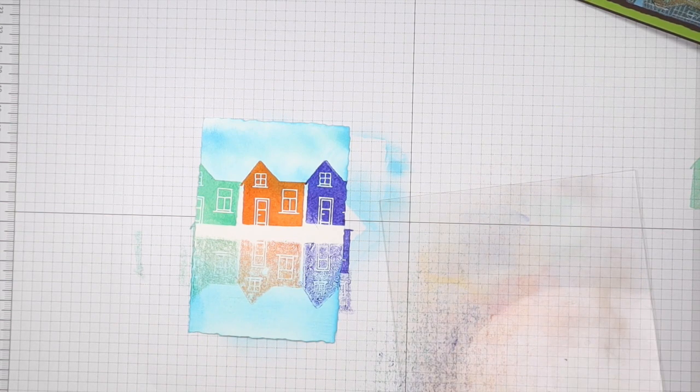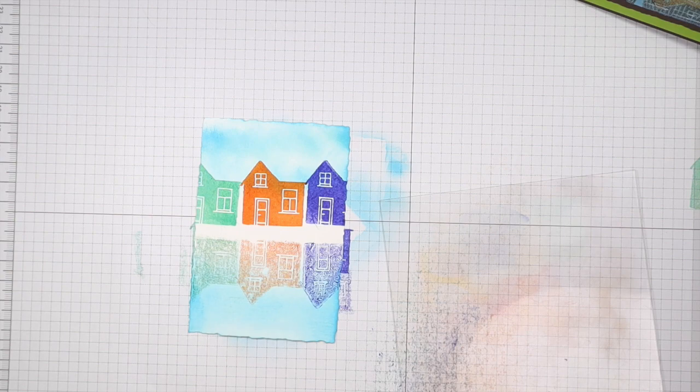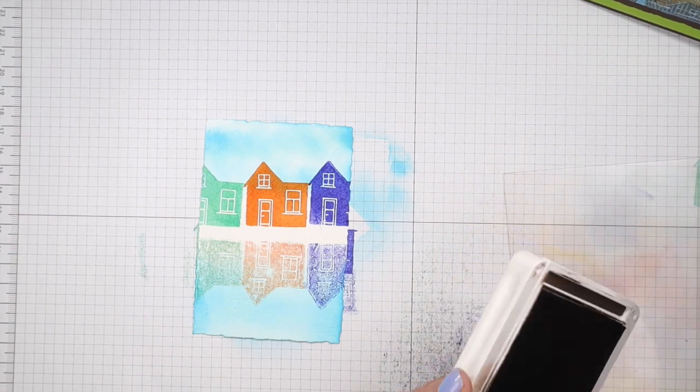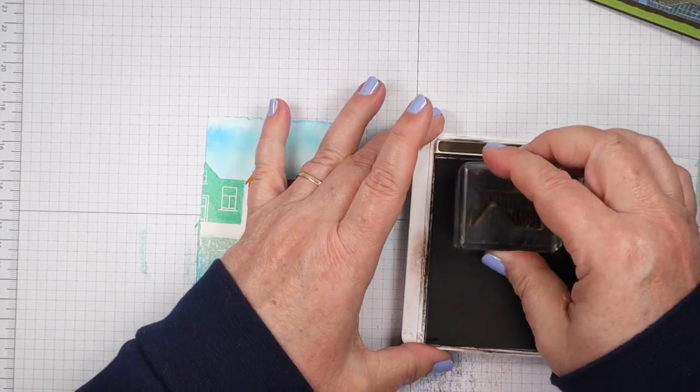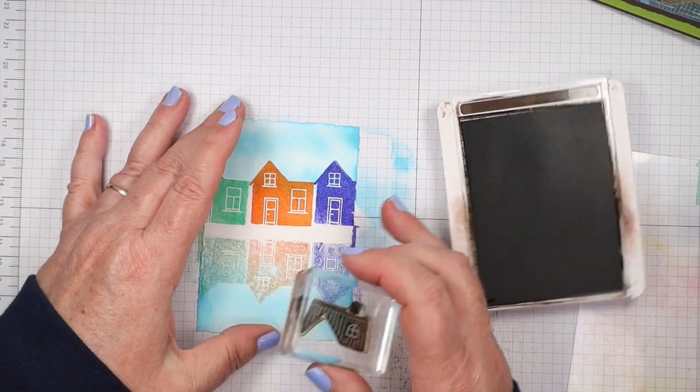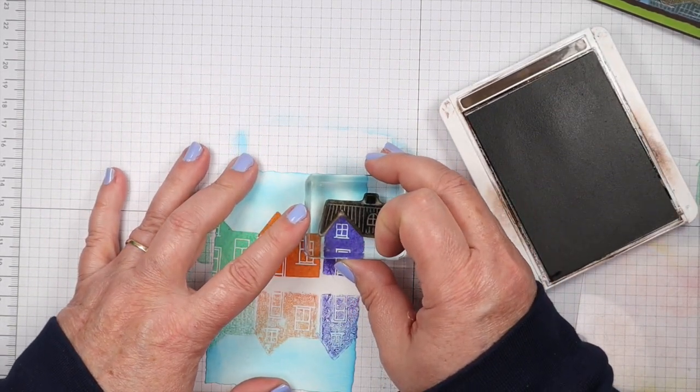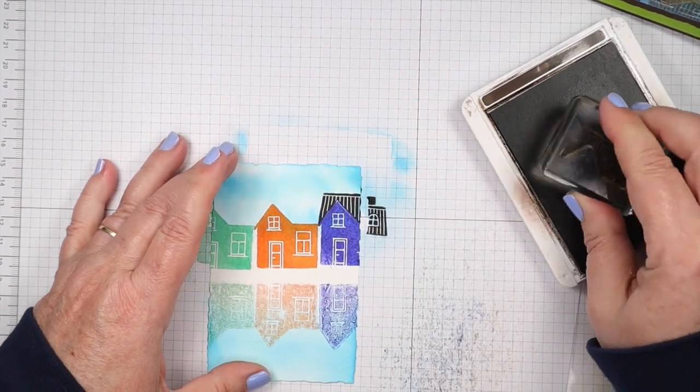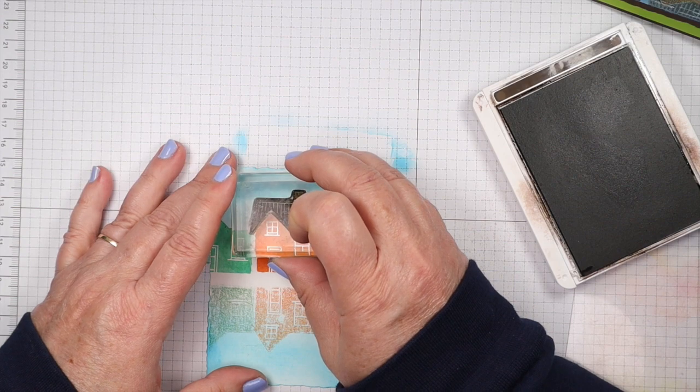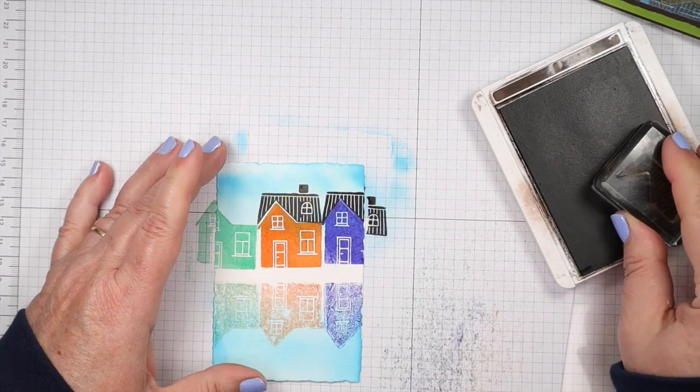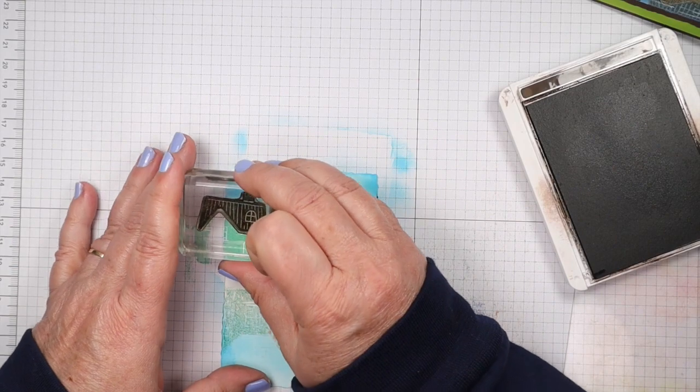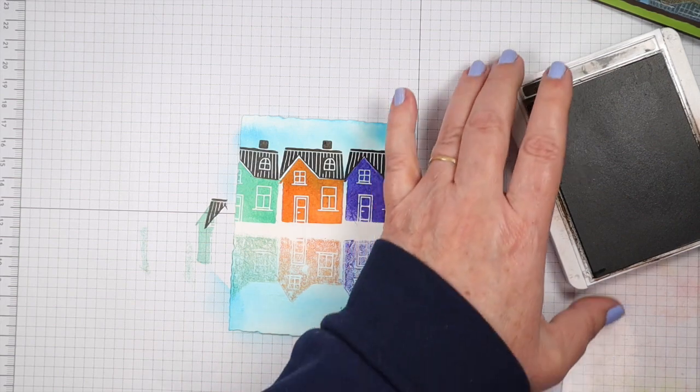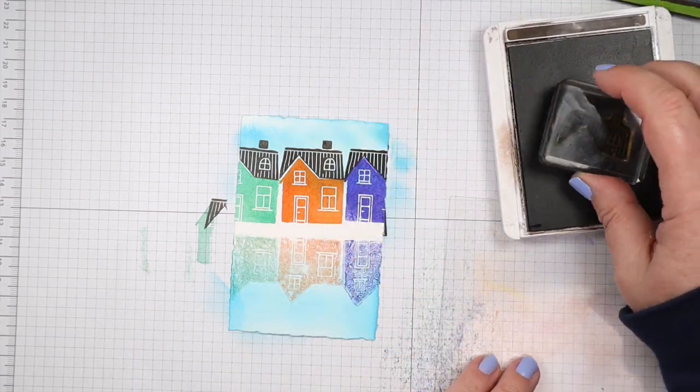And now they need some roofs. So we're just going to stamp all of them in Early Espresso. So I'm loading that up with the roof up with Early Espresso and I need to lean in here so I can see what I'm doing. Here's one. There's our third one. And then we need to do the same thing for our reflective side.